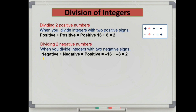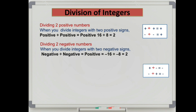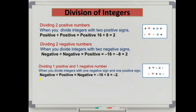When you divide integers with two negative signs, you get a positive integer. For example, minus 16 divided by minus 8: both are negative integers, so the result is in positive sign, that is plus 2. When you divide integers with one negative sign and one positive sign, the result is negative.